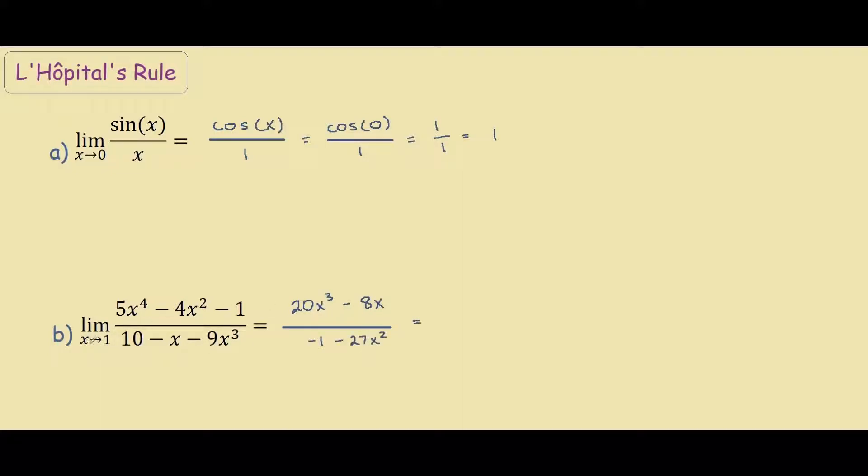So now when we substitute x equals 1, we have 20 minus 8, which is 12, divided by -1 minus 27, which is -28. So we can reduce this fraction by a factor of 4, so 12 divided by 4 is 3, and -28 divided by 4 is -7. So our limit of this function is -3/7.